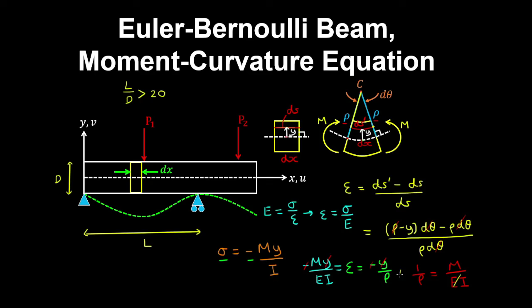If we multiply through by EI, and we derive the curvature in the previous video in Cartesian coordinates as the second derivative of the vertical displacement with respect to x, we end up with the bending stiffness by the curvature is equal to the bending moment, which is a function of x along the beam.